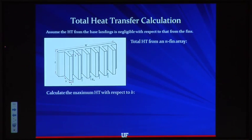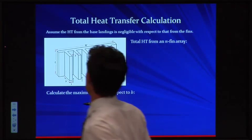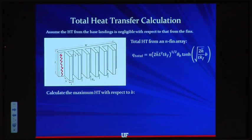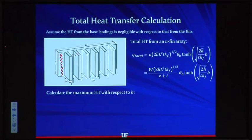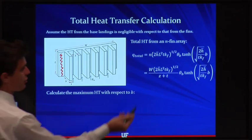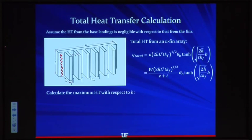For the total heat transfer calculation, we assume heat transfer from the base landings is negligible — those areas are treated as insulated. For an array of n fins, the total heat transfer equals qf times n, where n equals W over (z+t) from the last lecture. To find the maximum heat transfer with respect to fin height b, we differentiate Q-total with respect to b and set it equal to zero.